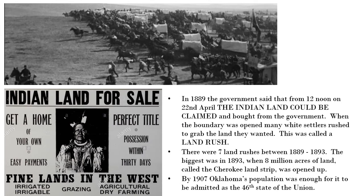In 1889, the government said that from 12 noon on the 22nd of April, the Indian land now available could be claimed and bought from the government. When the boundaries opened up, many white settlers rushed to grab the land they wanted — this was called a land rush. The government advertised it with notices like 'Indian land for sale', set the time of 12 noon on April 22nd, and people amassed on the border, then raced into the territories to claim the best newly available land. That's what we saw in the video.